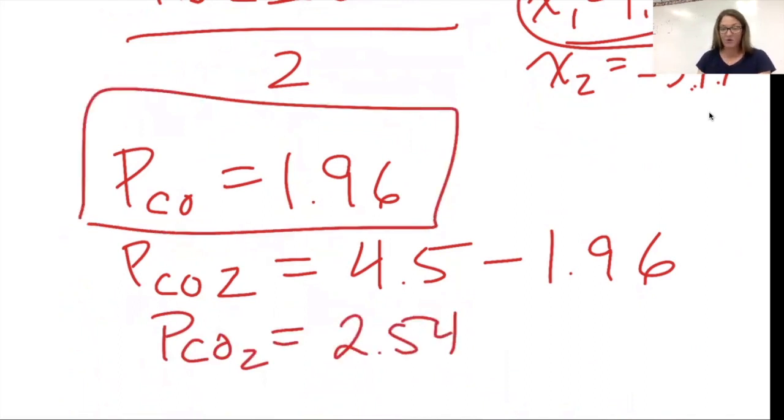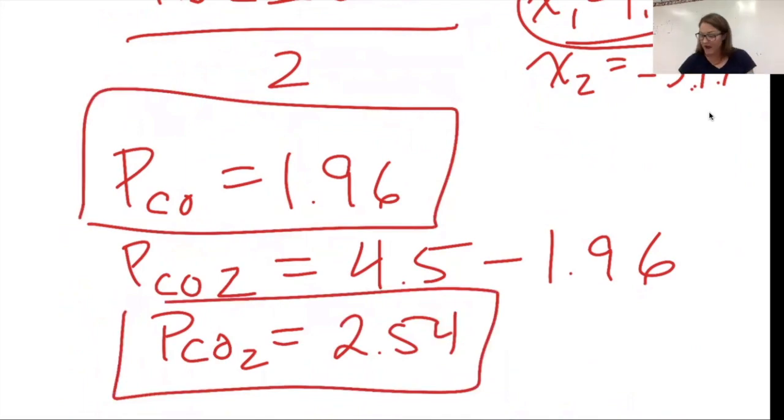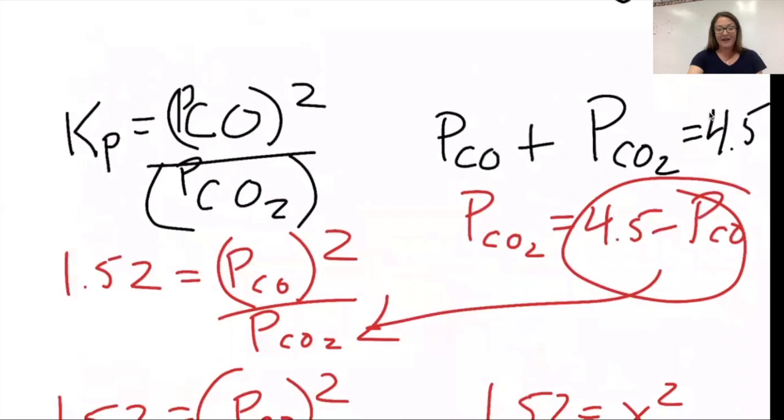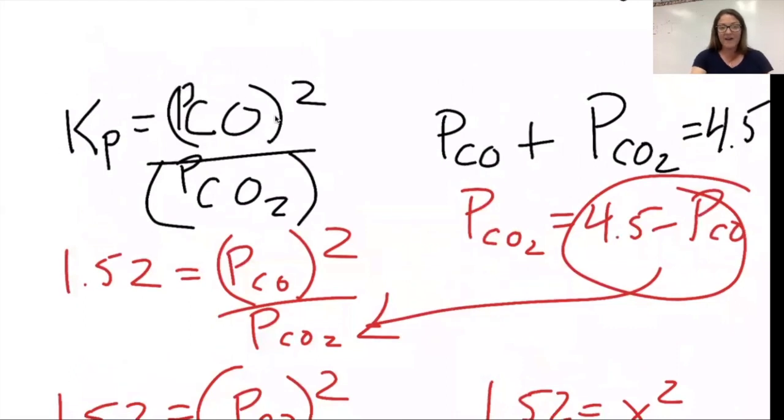I have both of my partial pressures at equilibrium. If I want to check to see if they're correct, remember, we can always plug back into an equilibrium expression. If I plug them in here and get 1.52 or something reasonably close, I'm happy.